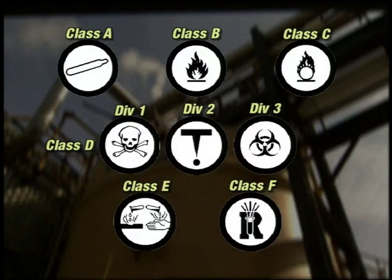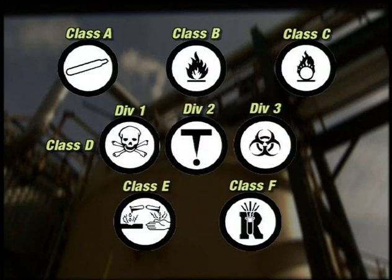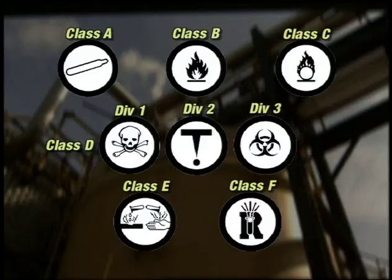Each of these classes is represented by a symbol, with the exception of Class D, which is broken into three divisions, and each division has its own symbol. So we have a total of eight WHMIS symbols, all of which we need to be familiar with.